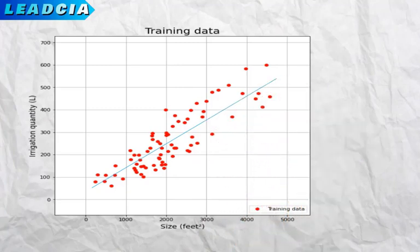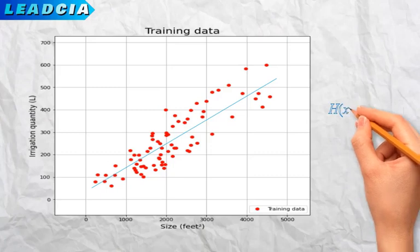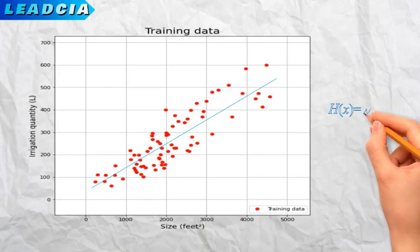This line allows to predict the amount of irrigation water for a garden whose area is not included in the training database. Where this line passes as close as possible to these points, the better the prediction will be.